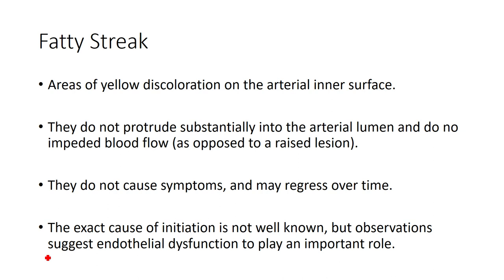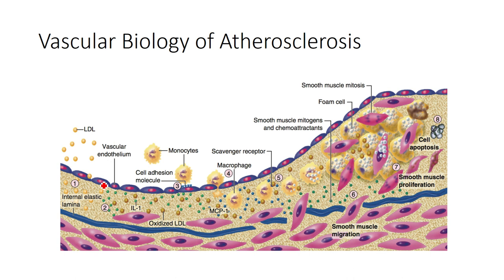The fatty streak appears as areas of yellow discoloration under the inner surface of the artery — under the endothelium. Initially they don't protrude into the lumen, but as they develop into raised lesions they impair blood flow. While we can't identify with absolute certainty which factor initiates which change, endothelial dysfunction plays probably the most significant role. When the endothelium is healthy, much of this process doesn't happen.